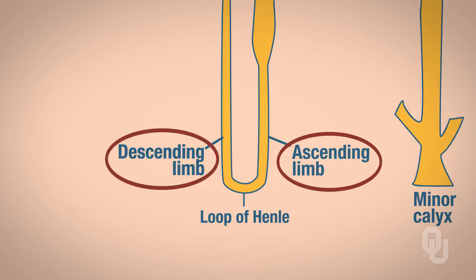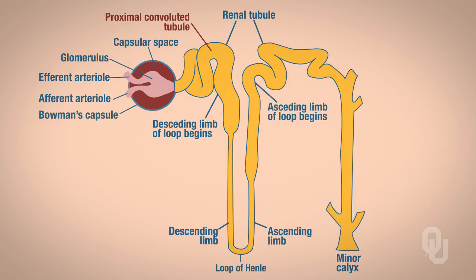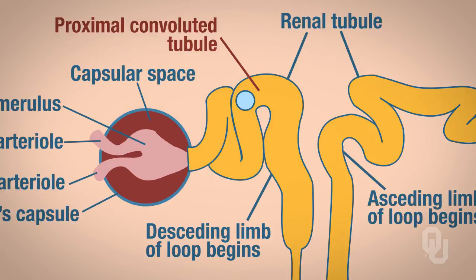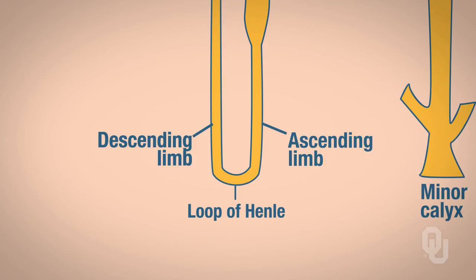Keep in mind that when the filtrate leaves the proximal convoluted tubule, it goes down through the descending limb, then passes through the ascending limb. We're going to start with the ascending limb first, and then we'll come back to the descending limb.